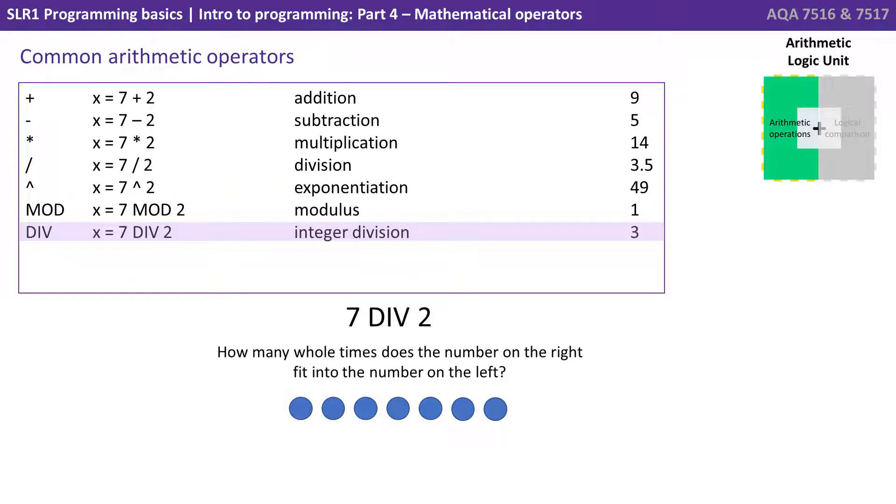Next we have div for integer division. Now this is how many whole times does the number on the right fit into the number on the left. So as we just said, the number 2 fits into the number 7 three whole times. So 7 div 2 is 3.